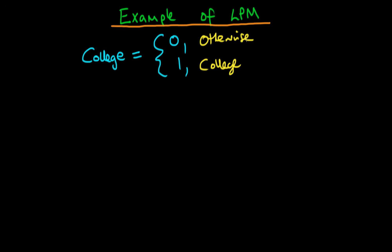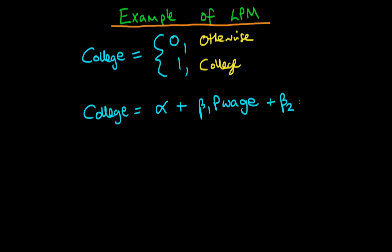The model we're going to be talking about here is going to have college as its dependent variable, and that's going to be equal to alpha plus beta 1 times their parental wage — the weekly wage rate of their parents — plus beta 2 times CS, where CS represents whether or not an individual has completed school. CS is a dummy variable, whereas parental wage is a continuous variable.